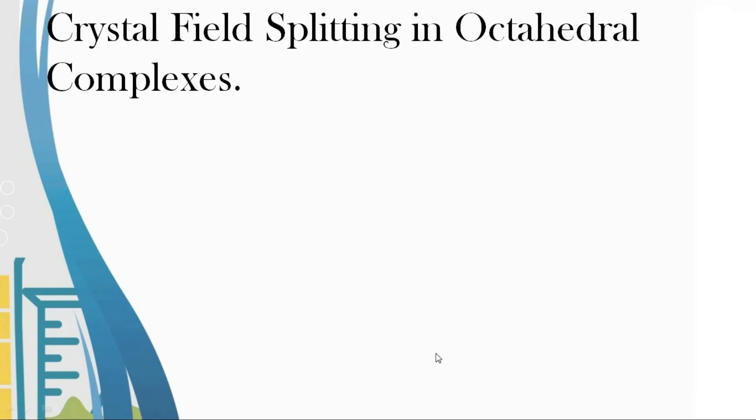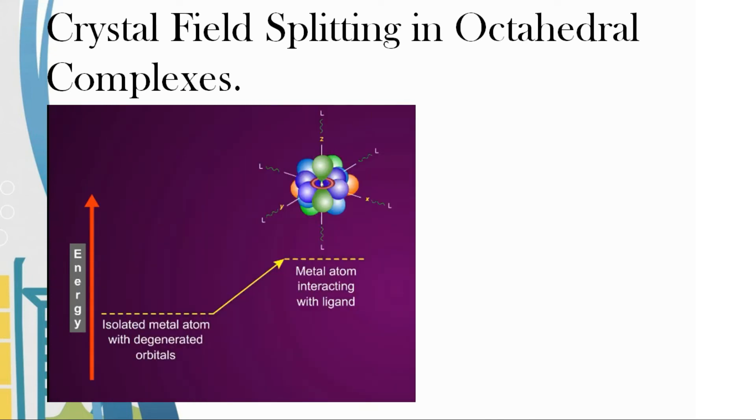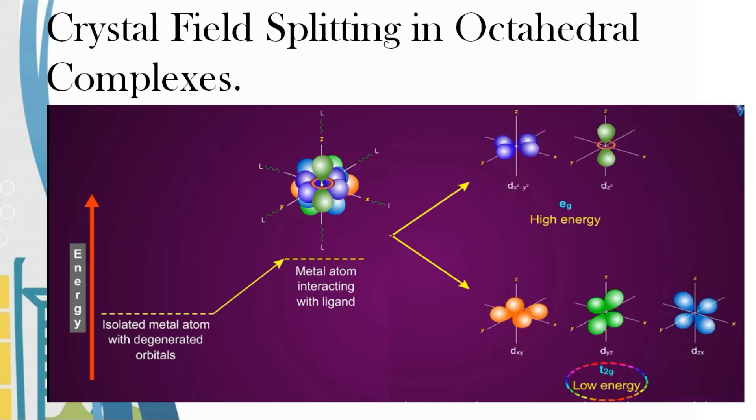In octahedral complexes, six ligands approach along the axes. The orbitals pointing along the axes (dx²-y² and dz²) have higher energy due to greater repulsion, forming the eg set. The orbitals pointing in between the axes (dxy, dyz, dzx) have lower energy, forming the t2g set.